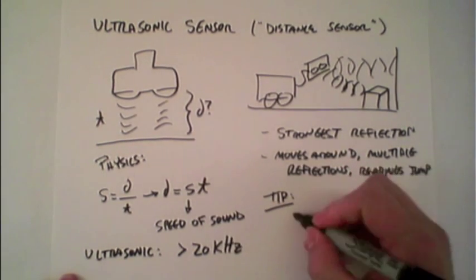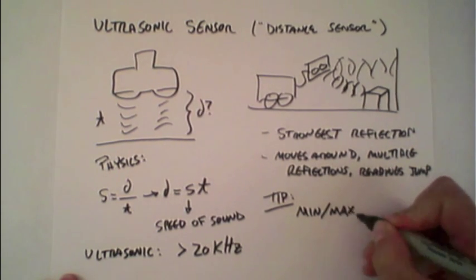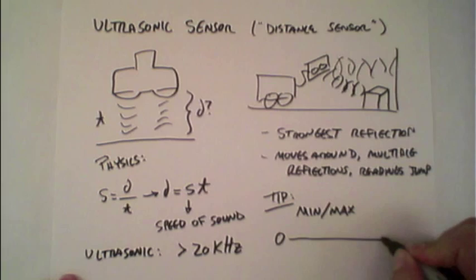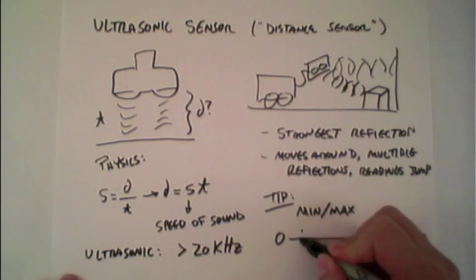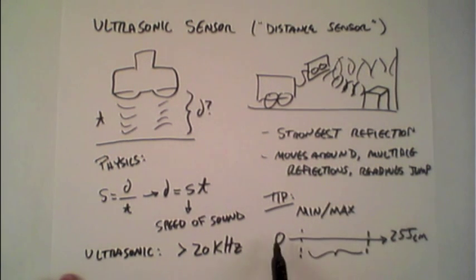Another tip to note is with regards to the min and max. In theory, the sensor goes from zero all the way up to 255 centimeters. However, at the minimum range and at the maximum range, there sometimes can be some errors, so really that sweet spot is right here in the middle.